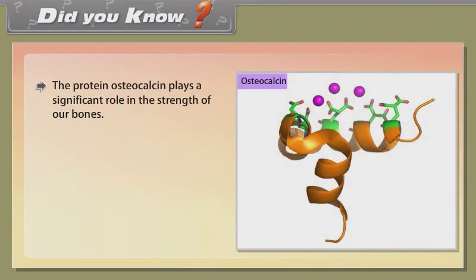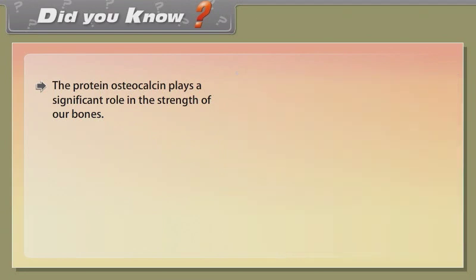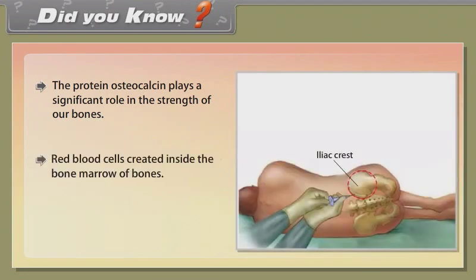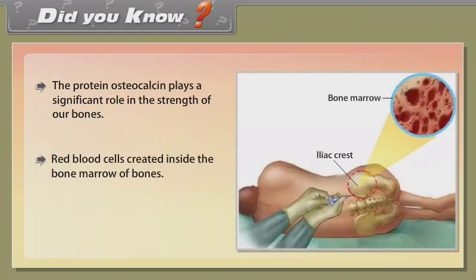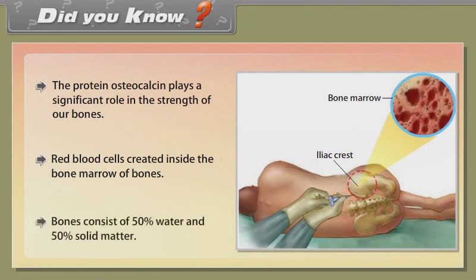Did you know: the protein osteocalcin plays a significant role in the strength of our bones. Red blood cells are created inside the bone marrow of bones. Bones consist of 50% water and 50% solid matter.